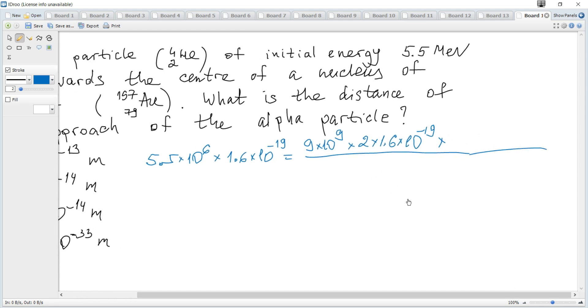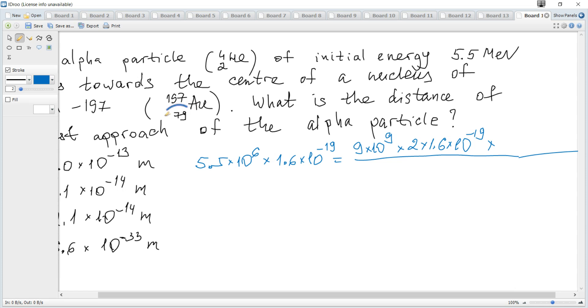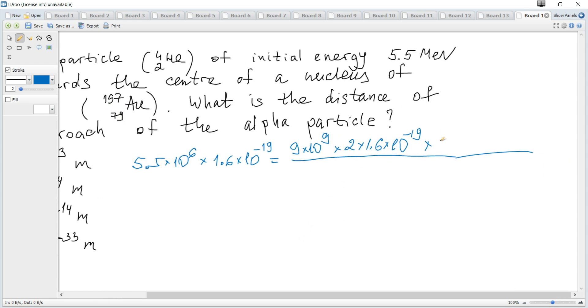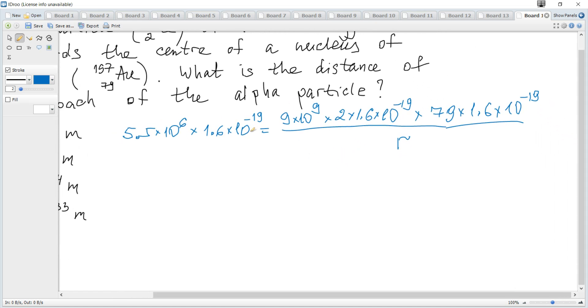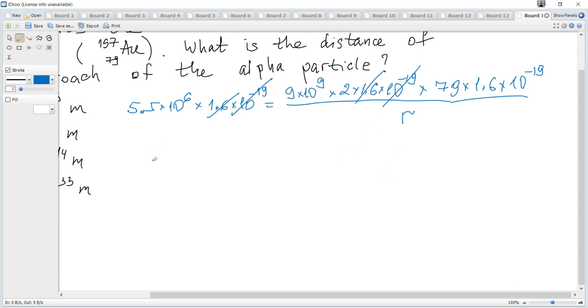The charge of the gold nucleus is 79, so it's times 79 times 1.6 times 10 to negative 19, and divided by r. This r is the required distance. We can cancel one elementary charge.